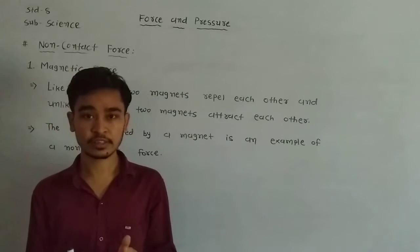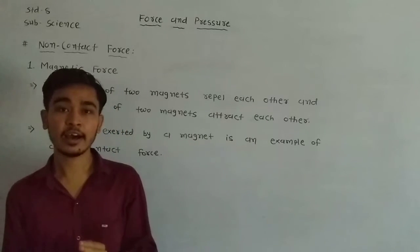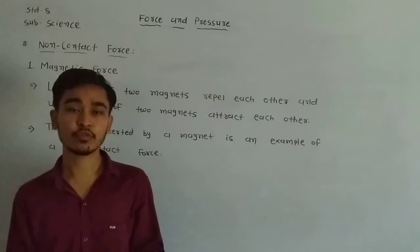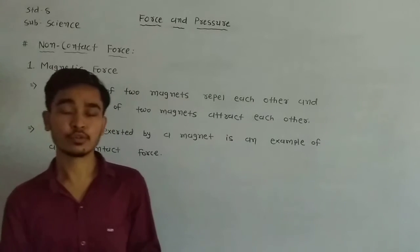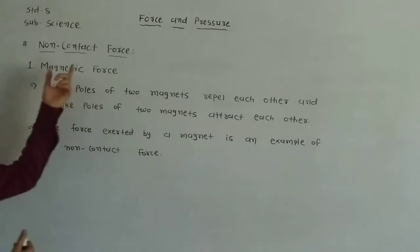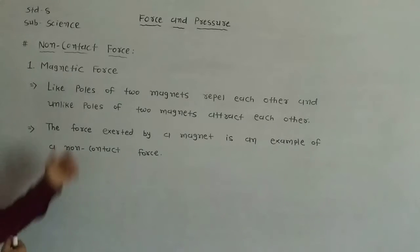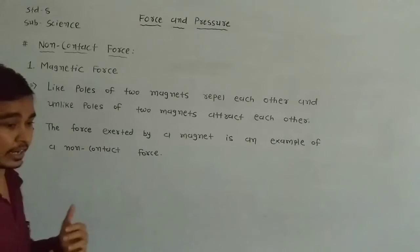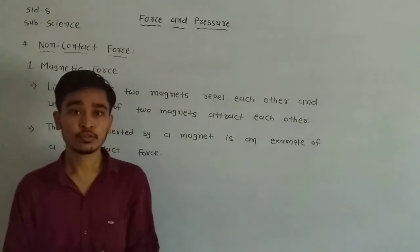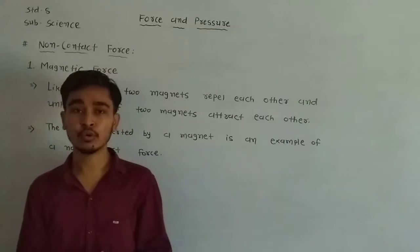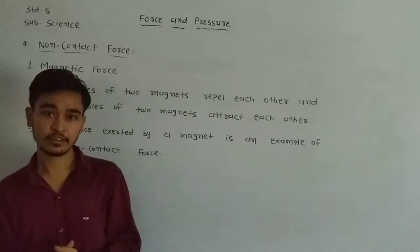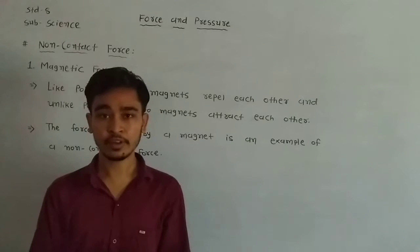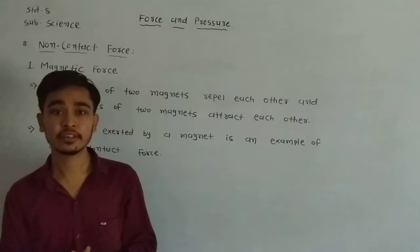When two things are not in contact and a force is still exerted, that is a non-contact force. Today we learn about non-contact force. The first example is magnetic force. We already know what a magnet is, and we will perform an activity to understand magnetic force.